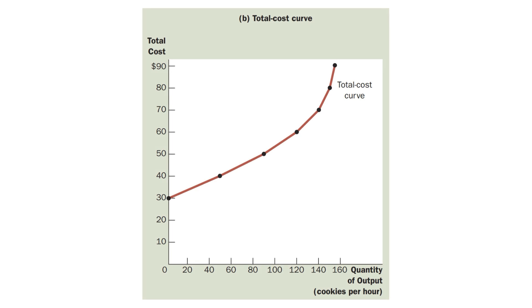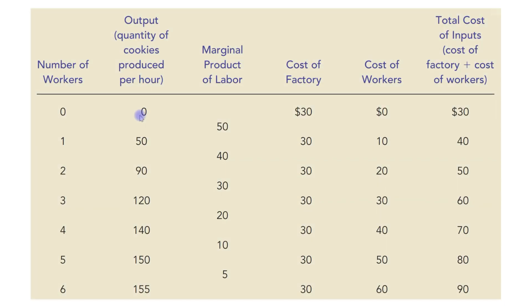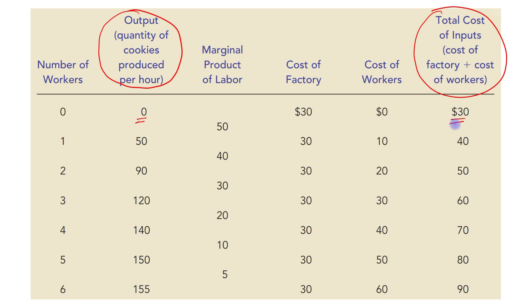If we plot these two columns, on the horizontal axis we have quantity of output and on the vertical axis we have total cost. When we draw these combinations from the table, when the quantity produced is zero, the total cost is $30. We can see that even when quantity produced is zero, the total cost is positive at $30 because of the fixed cost of the factory.